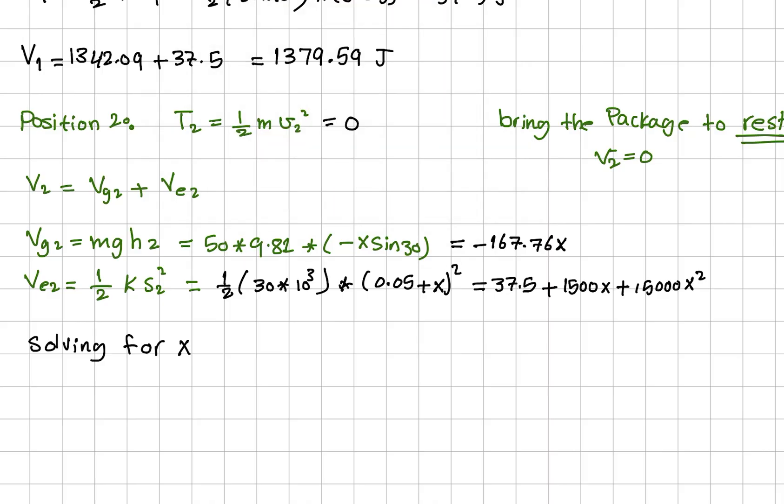Before that, just for the sake of clarity, let me plug in everything here. So 100 plus 1342.09, these are the components at position 1, kinetic plus potential, equals minus 167.61x plus 37.5 plus 1500x plus 15000x².